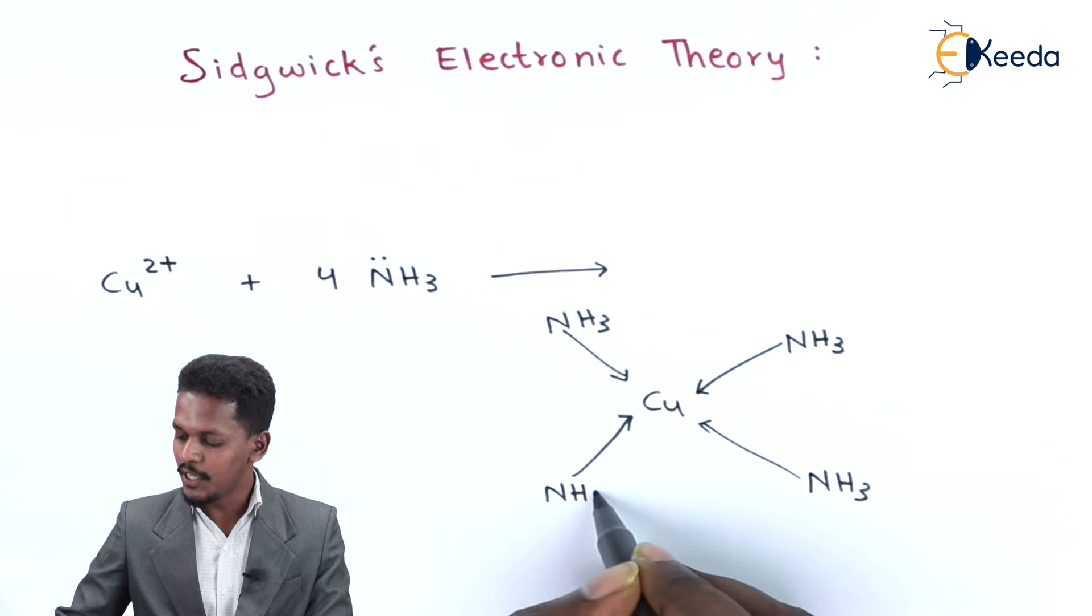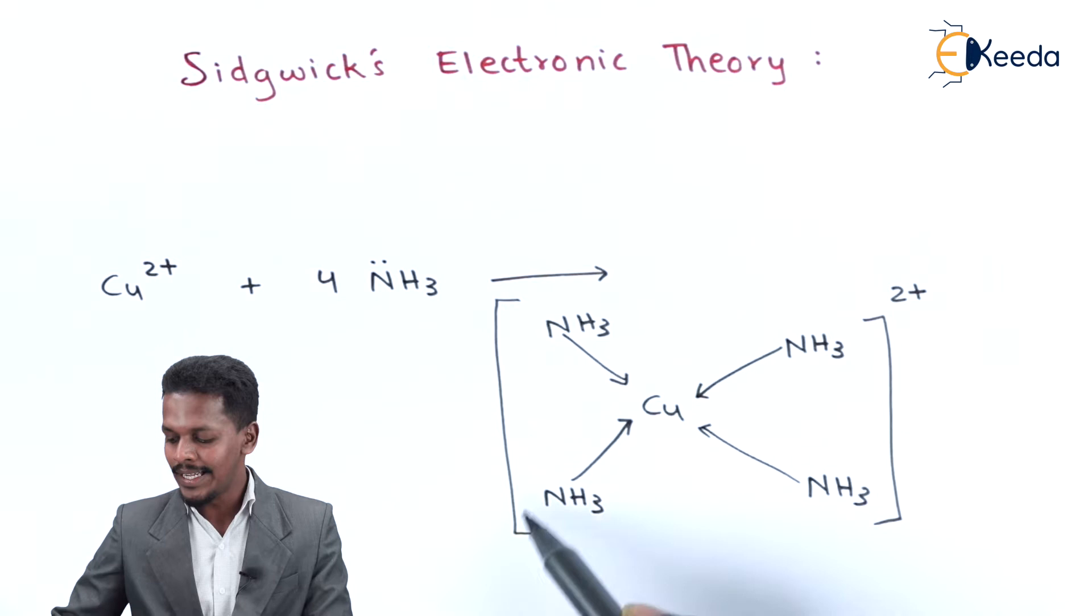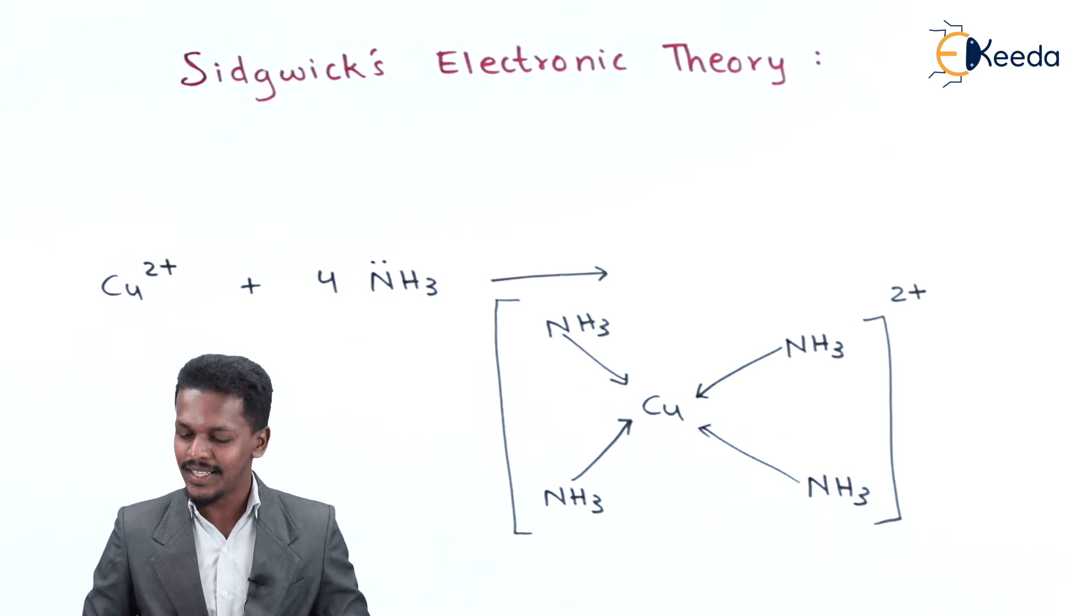There are four ligands, and that's why we can find four coordination bonds. This is Sidgwick's Electronic Theory for this complex. Similarly, we can draw this for another complex.